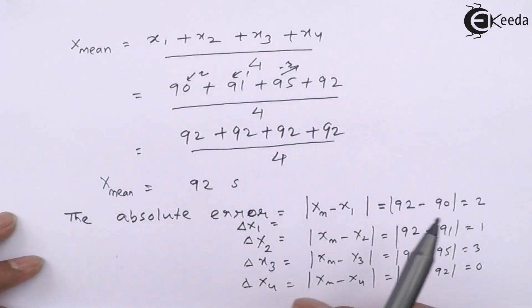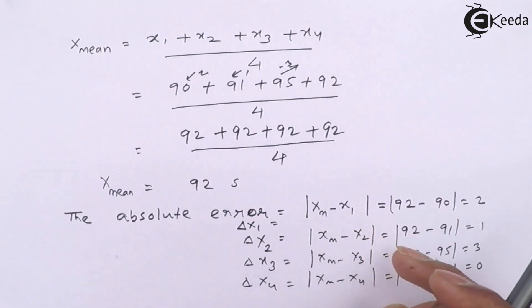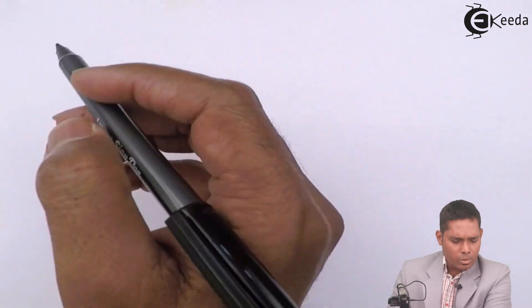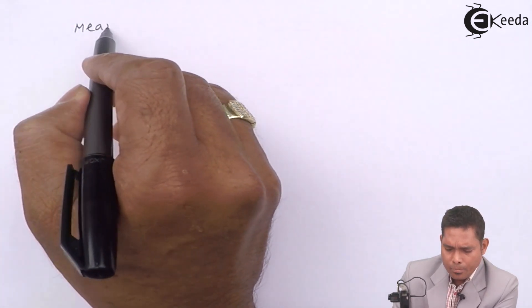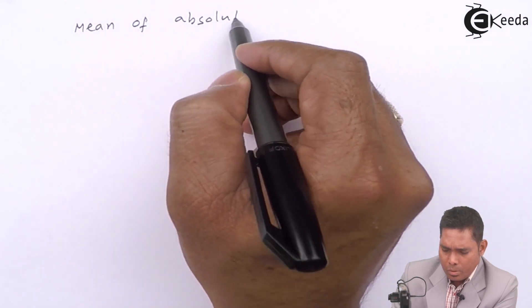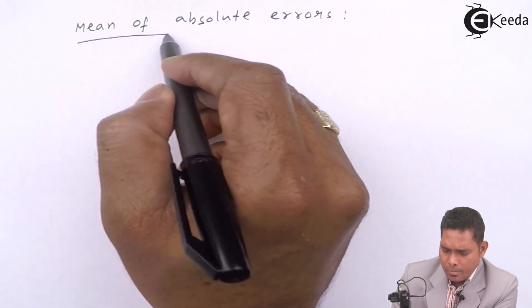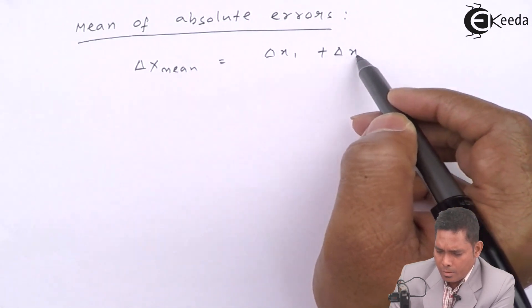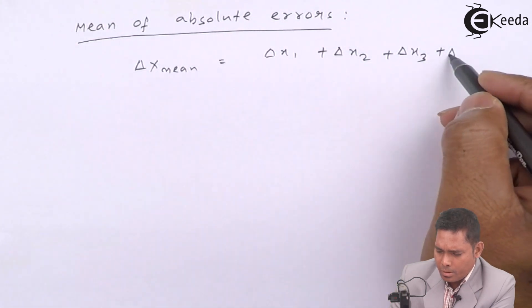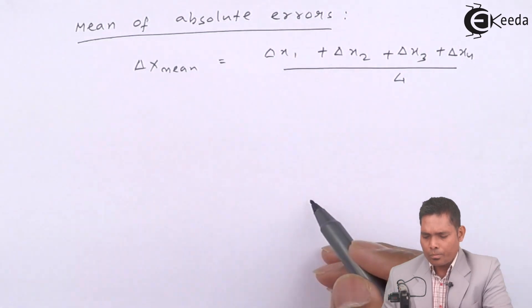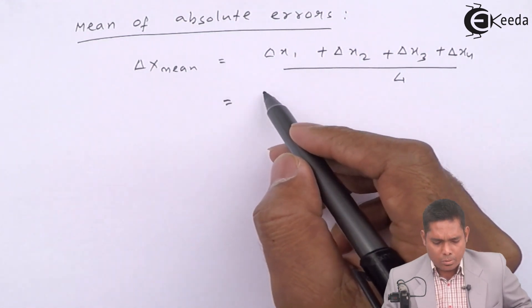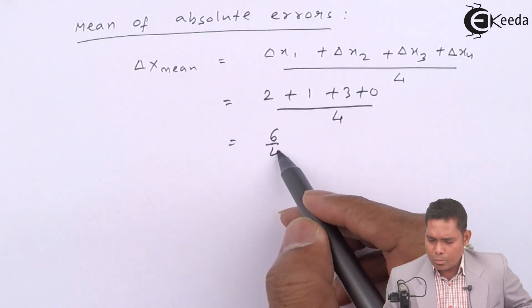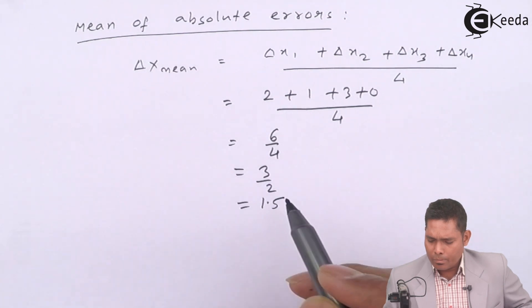So these are the absolute errors we are getting. And we will take the mean of these absolute errors, individual errors that we got from the individual observations. So what we will do, we will find the mean of absolute errors that is delta X mean is equal to delta X1 plus delta X2 plus delta X3 plus delta X4 divided by 4. This is, we got individually 2, 1, 3, and 0 divided by 4. This is 4 and 6, 6 by 4, which is 3 by 2 is 1.5.